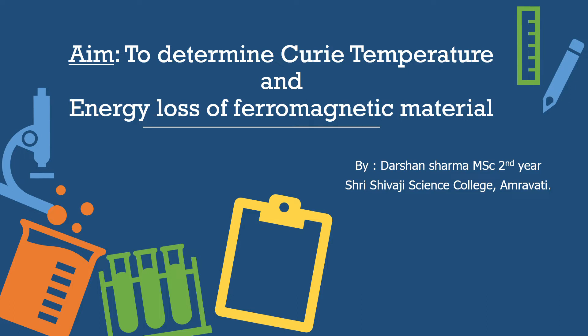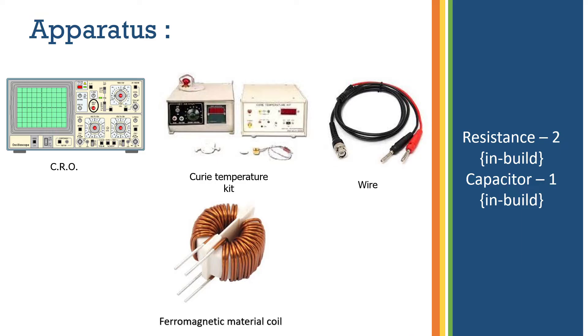To do this experiment we use apparatus like CRO, Curie temperature kit, connecting wires, and ferromagnetic material coils. We use many ferromagnetic material coils which are wounded by copper wire.